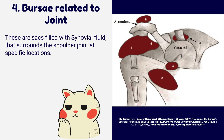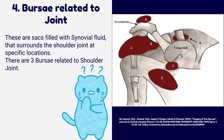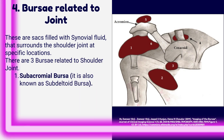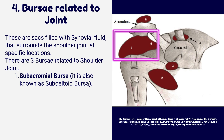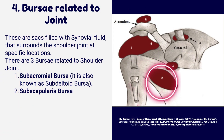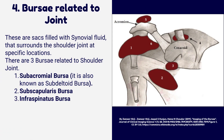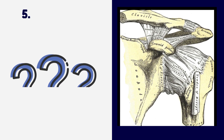Bursae related to the shoulder joint are sacs filled with synovial fluid that surround the shoulder joint at specific locations. There are three bursae: the subacromial bursa, also known as the subdeltoid bursa; the subscapularis bursa; and the infraspinatus bursa.